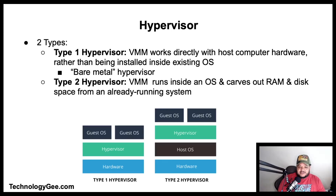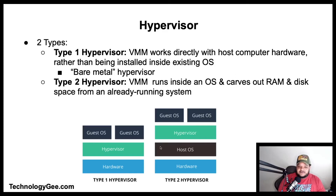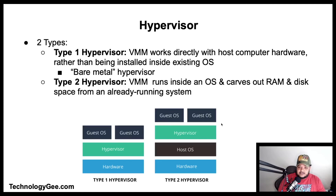Here is a graphic showing the differences between a Type 1 and Type 2 hypervisor. With a Type 1 hypervisor, the computer boots straight into the hypervisor, and from there you set up the VMs or guest operating systems. With a Type 2 hypervisor, the machine boots into a normal operating system, and then you turn on the hypervisor, which allows you to create the VMs or guest operating systems.